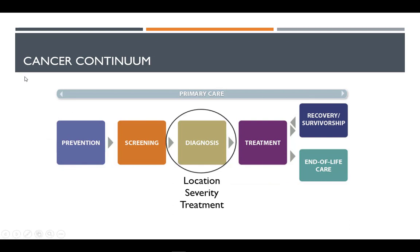Once diagnosed with cancer and treatment begins, the complications will depend on the location of the cancer, the stage of it, and treatment utilized. In order for the body to reach a stage of recovery, adequate nutrients for repair of damaged cells and growth of healthy ones will be necessary.